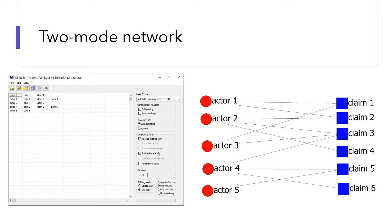You can use many network analysis software to conduct a discourse network analysis, such as R and Discourse Network Analyzer. Here, I provide an example of how to manage the discourse data in UCINet. I created a node list in UCINet. The first column represents the nodes. In policy discourse, they are policy actors who made claims or statements of policy.